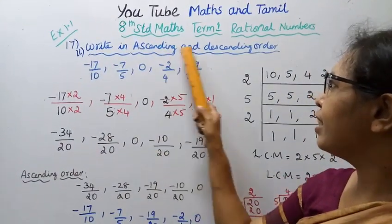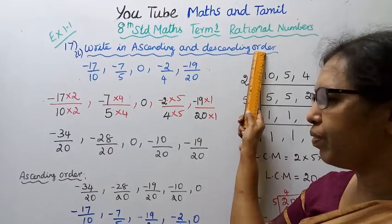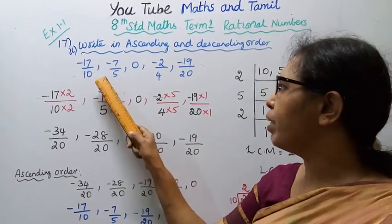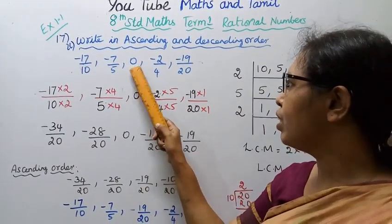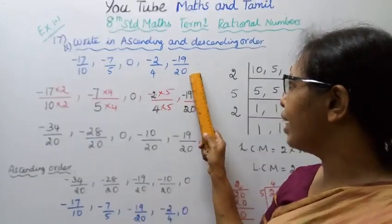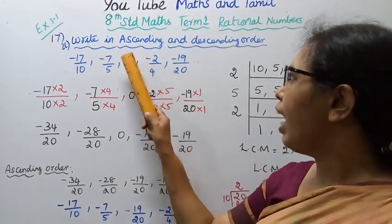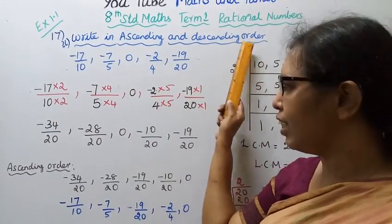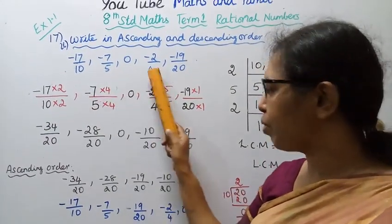The question is: -17/10, -7/5, 0, -2/4, -19/20. Write these rational numbers in ascending order and descending order.